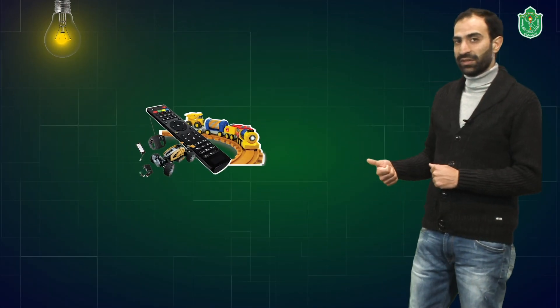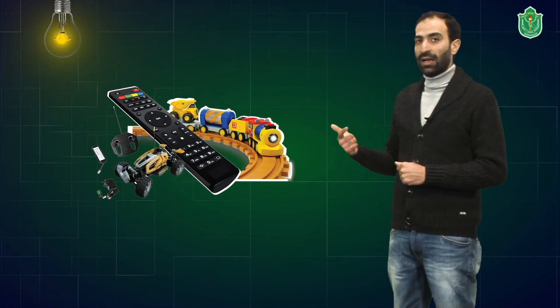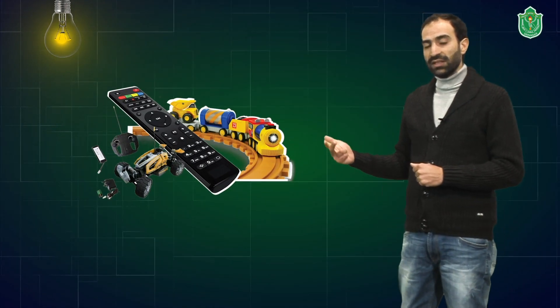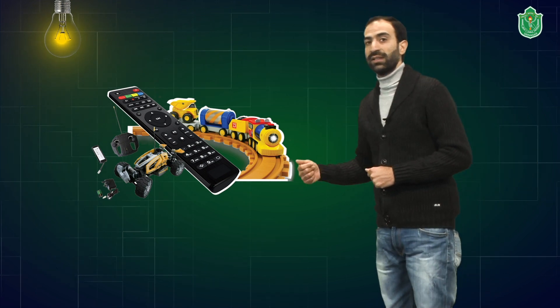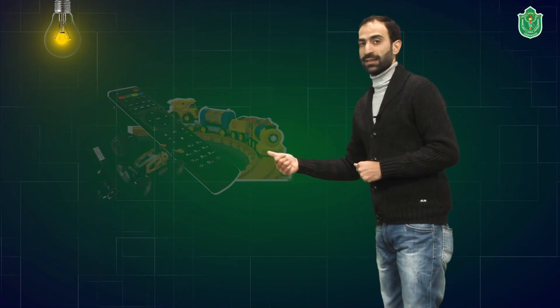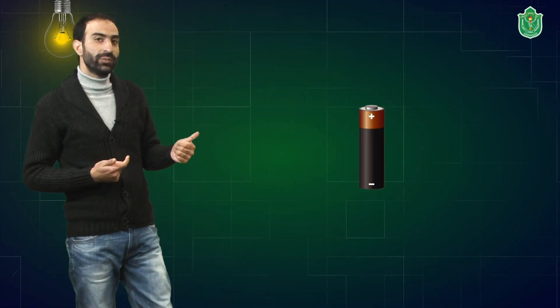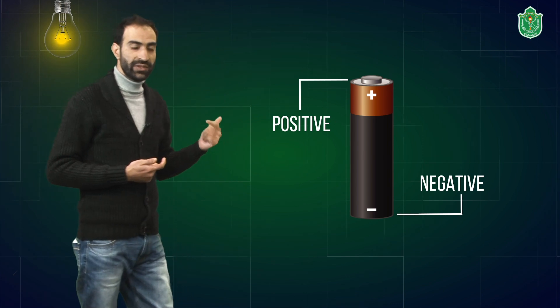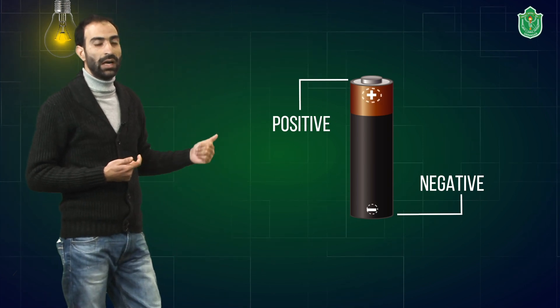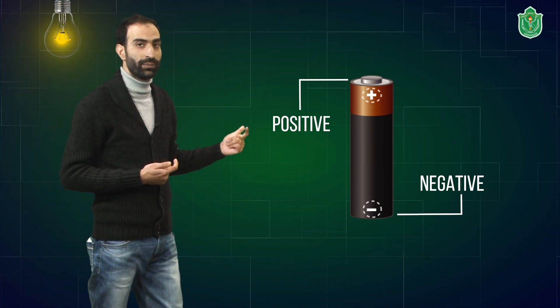Children, you might have seen that various electrical appliances like the remotes of our TV, the toys, and various other things work on electric cells. Electric cells come with two terminals — the negative terminal and the positive terminal — which are very well marked on the cell.